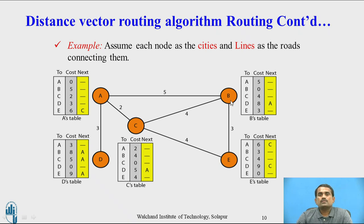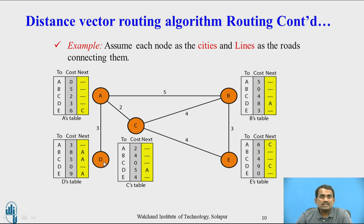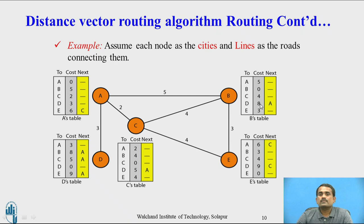For node B: from B to A, cost is 5. B to B is 0. B to C, cost is 4. B to D, via A, cost is 8 — because B to A is 5 and A to D is 3, total 8. B to E, direct distance is 3.